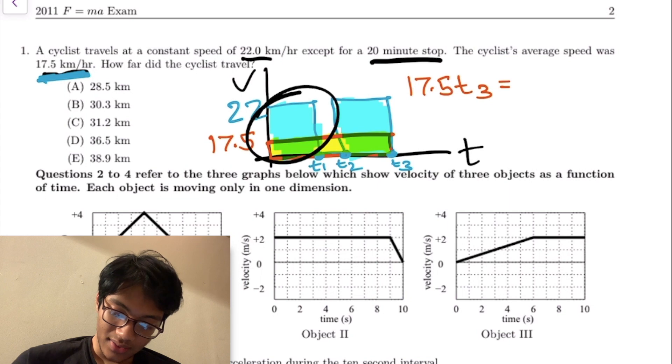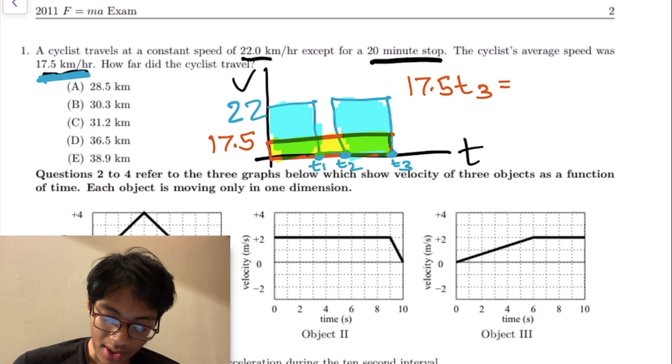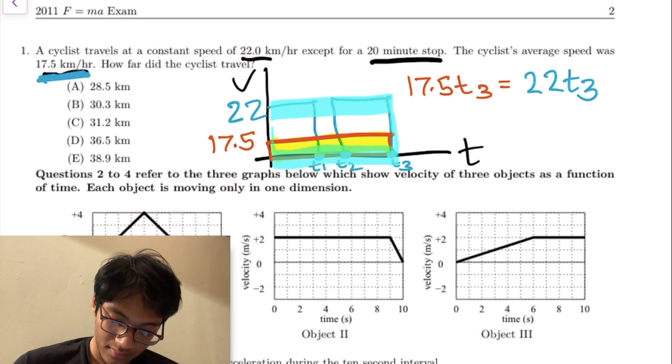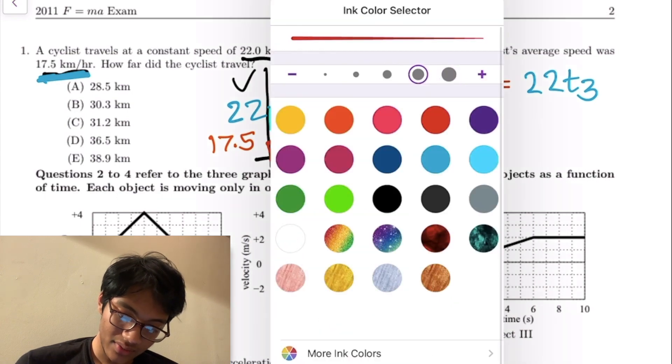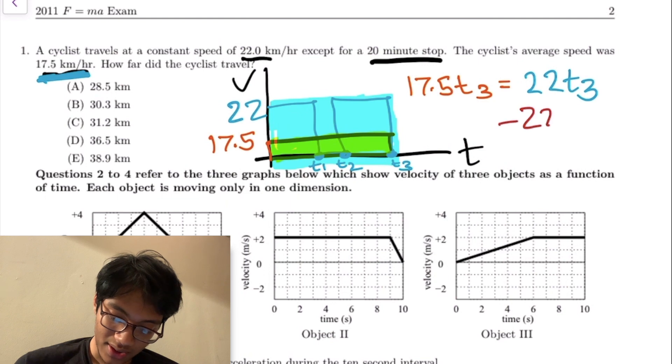Whatever we add up, we got to exploit the fact that we know there's a 20 minute gap right there. I can say that the distance covered is going to be 22 times t3 - that's going to give me this entire space. But we're going to take out what times he stopped, so I'm going to take away 22 times (t2 minus t1). That's going to take away this portion right here, this middle portion.